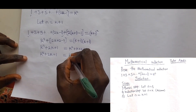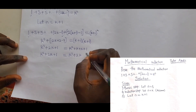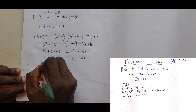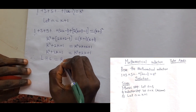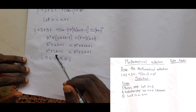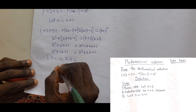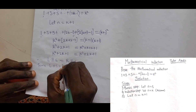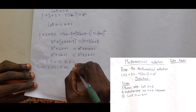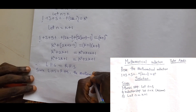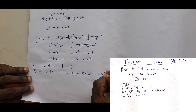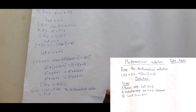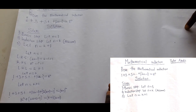We notice that our left-hand side equals the right-hand side. Therefore, left-hand side equals right-hand side. Since left-hand side equals right-hand side, the mathematical induction is true. You can watch my other videos on mathematical induction on my YouTube channel. Subscribe, like, comment, and share. Thank you.